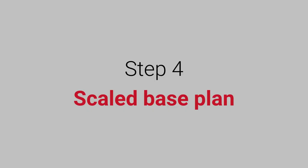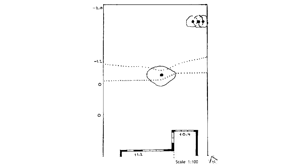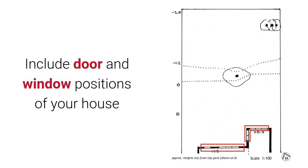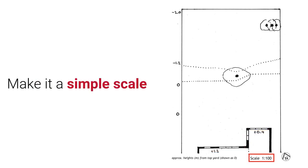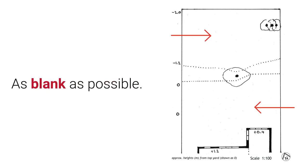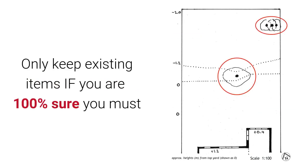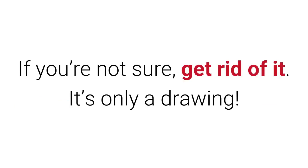Step 4: A scaled base plan. You can see here I've got a base plan of the backyard of a property. All we include is the property boundary, as well as the back area of the house. You want to make sure you include door and window positions of your house. You also want to make it a really simple scale, something that's easy to follow, and you want to make sure it's as blank and empty as possible. Only keep existing items if you are 100% sure you must. If you're not sure, get rid of it. Just remember, it's only a drawing — you can always put things back in at a later stage.